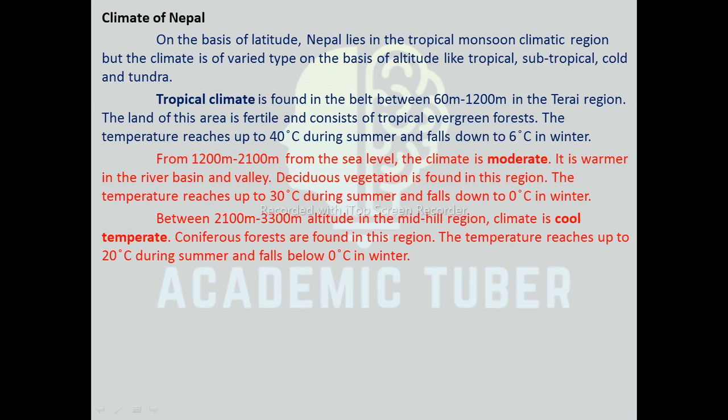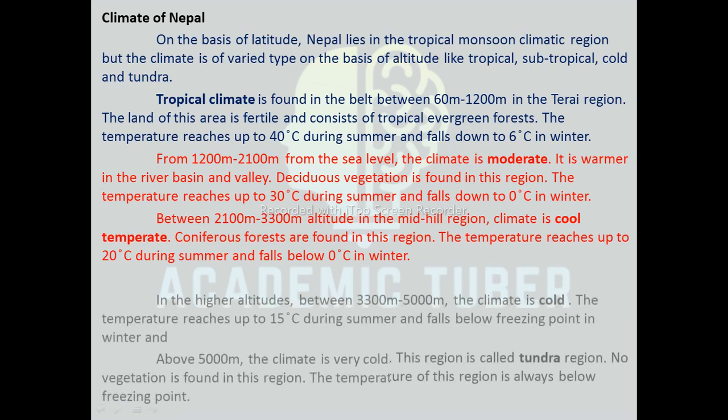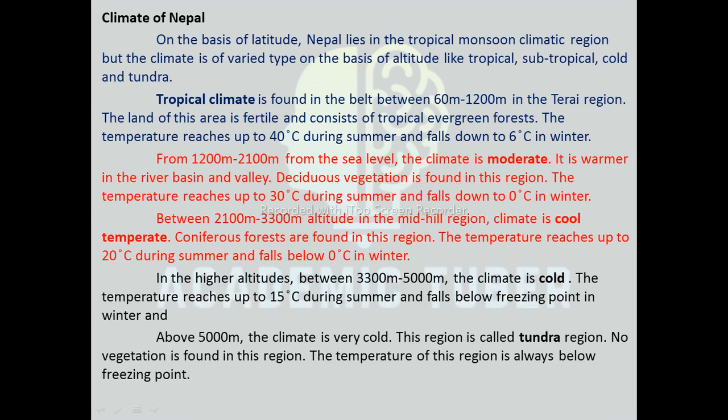In the cool temperate zone, temperature reaches up to 20 degrees Celsius in summer and falls below 0 degrees Celsius in winter. At higher altitudes between 3300 meters to 5000 meters, the climate is cold. Temperature reaches up to 15 degrees Celsius in summer and falls below the freezing point in winter. Above 5000 meters, the climate is very cold. This region is called the tundra region. No vegetation is found in this region, and the temperature is always below the freezing point.